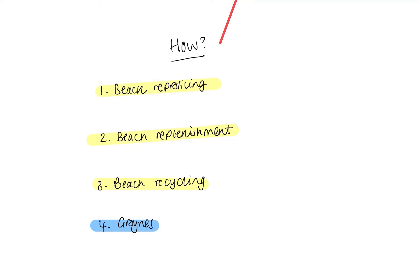The whole purpose and need for beach reprofiling at Pevensey Bay is because during the winter months material is carried down to the beach by strong backwash. The problem with that is it leaves the upper beach vulnerable to erosion. So with beach reprofiling, bulldozers are brought in to drag the material back up the beach and create a gentle sloping profile.